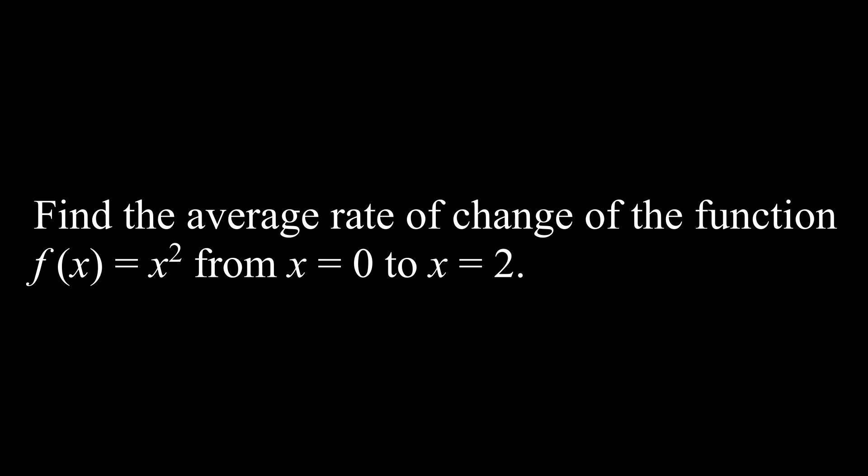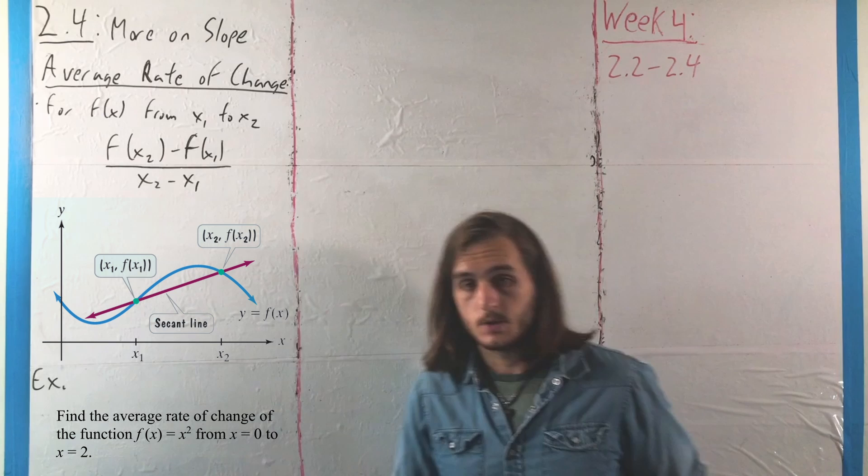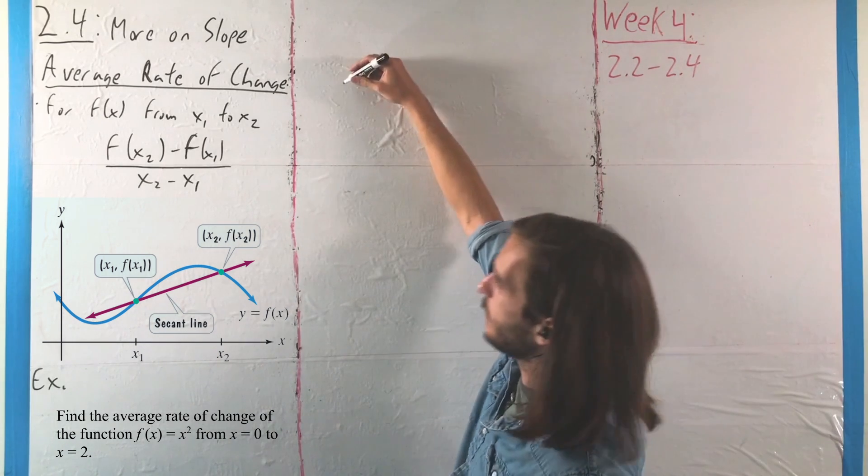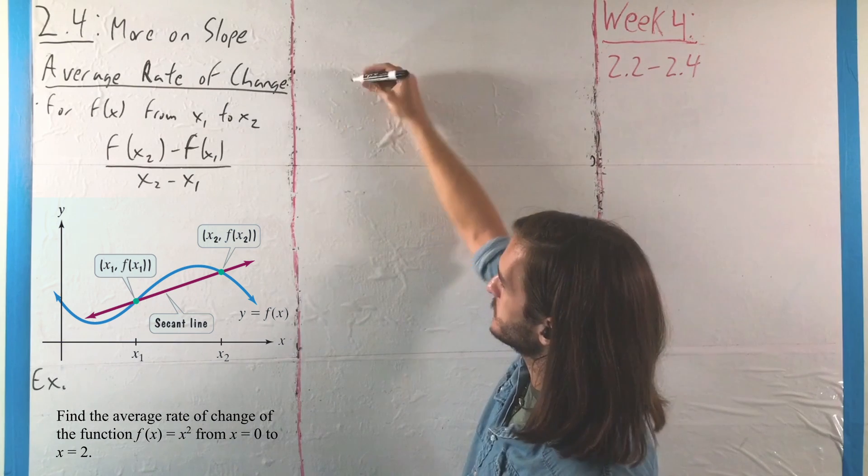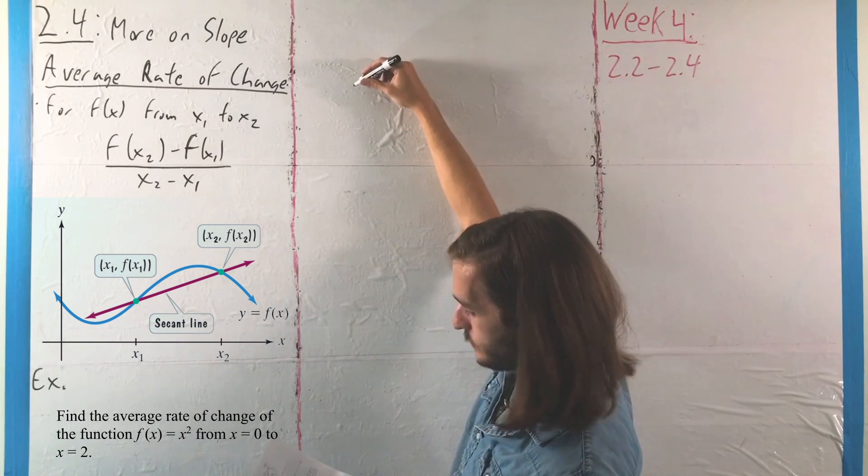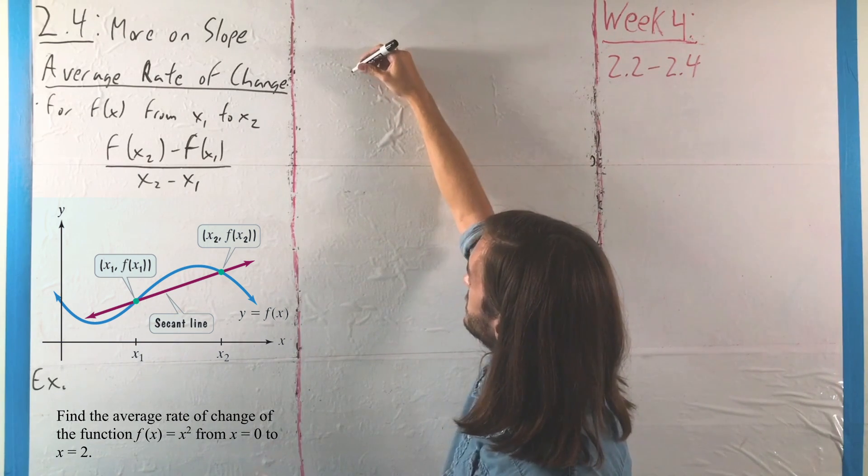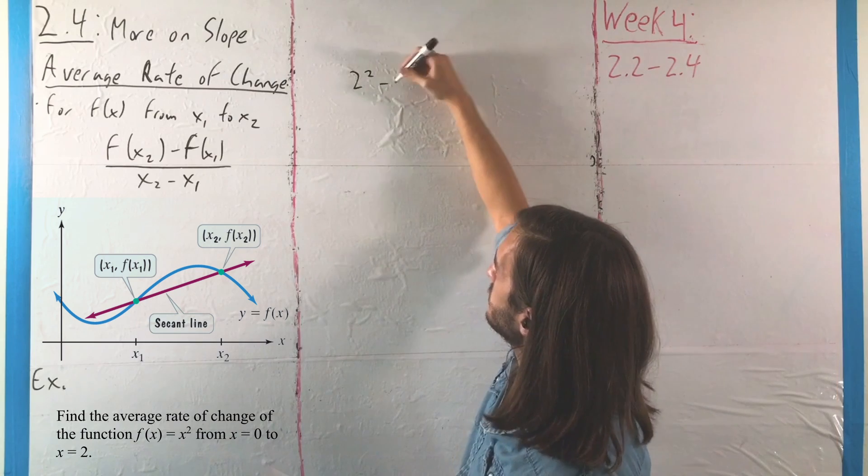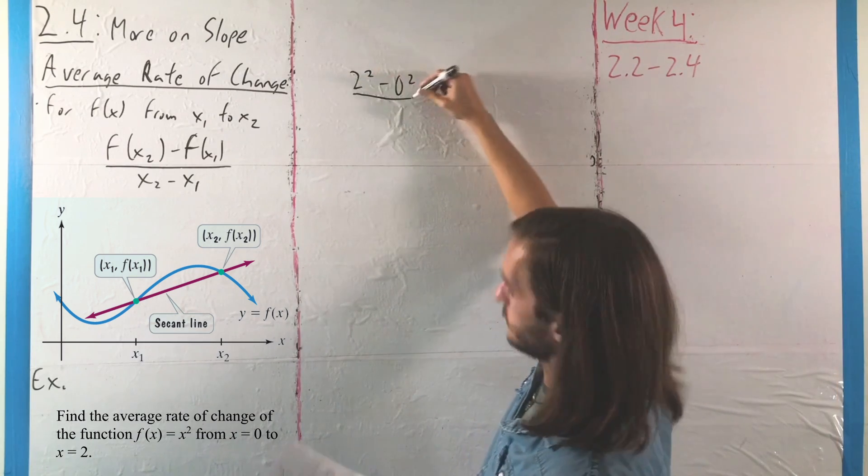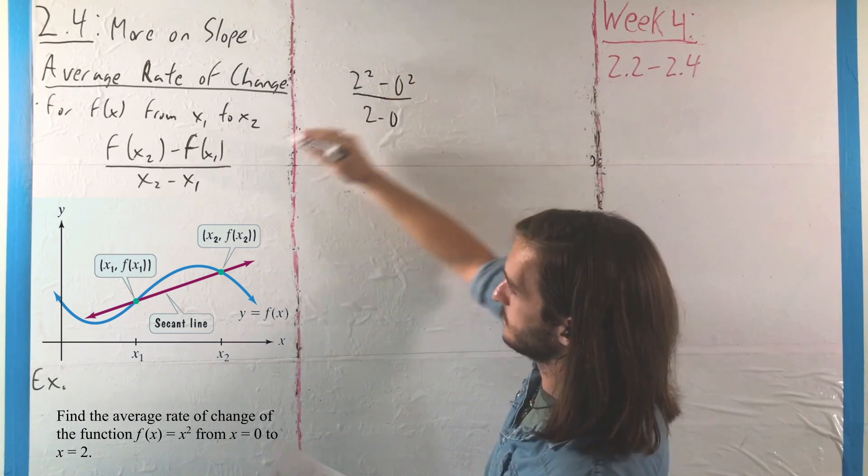For this example, we want to find the average rate of change of the function f(x) = x² from 0 to 2 in terms of x. So here, find the slope of a secant line. That's always just a matter of applying that formula, so we're going to pull it over, and we will end up having 2² minus 0² over 2 minus 0.